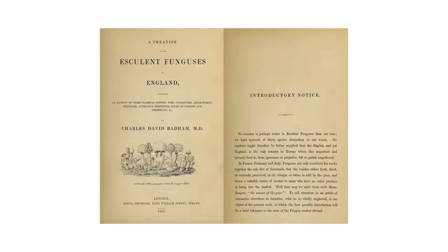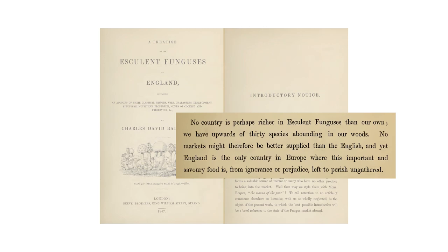One of the earliest popular English-language guides to edible mushrooms was written by the British physician and naturalist Charles Badham in 1847. Badham had toured continental Europe — Italy, France — and was blown away by all the mushrooms available at local markets. He wanted to bring this back to England, where nobody really ate mushrooms and many working-class people were struggling to find food, right after the Irish potato famine. As Badham noted: 'No country is perhaps richer in esculent funguses than our own. No markets might therefore be better supplied than the English. And yet England is the only country in Europe where this important and savory food is from ignorance or prejudice left to perish ungathered.'